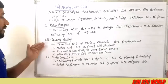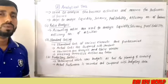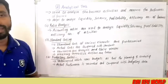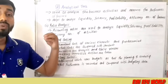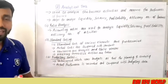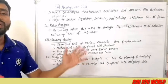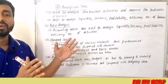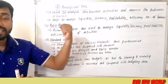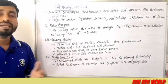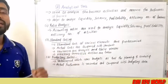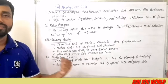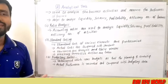Standard costing involves predetermining the standard costs of various elements of cost, then finding out the actual cost of each element, and comparing the actual cost with the standard cost to find out variances.